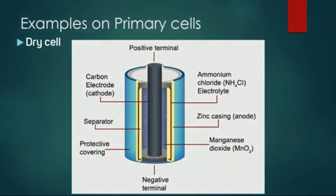At the center of the cell battery lies a carbon rod which is the cathode and zinc casing is considered as the anode. So let's understand how it works.